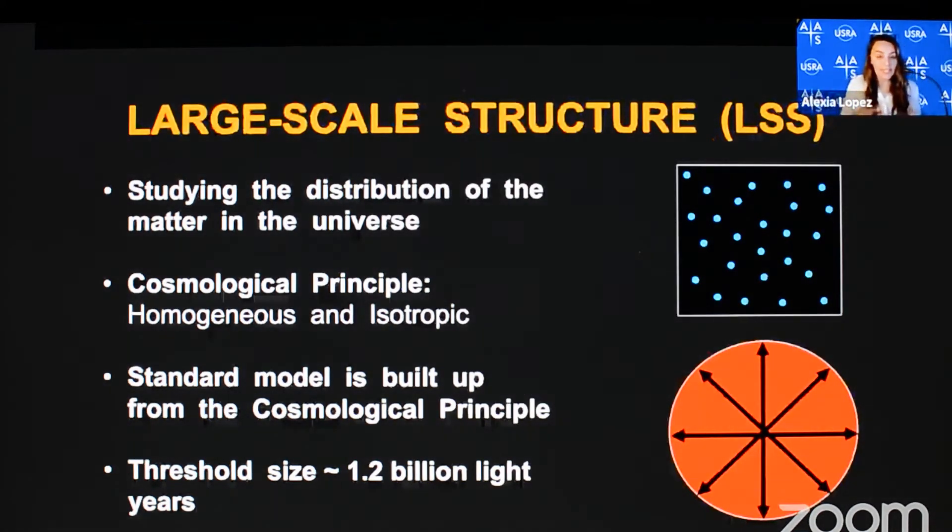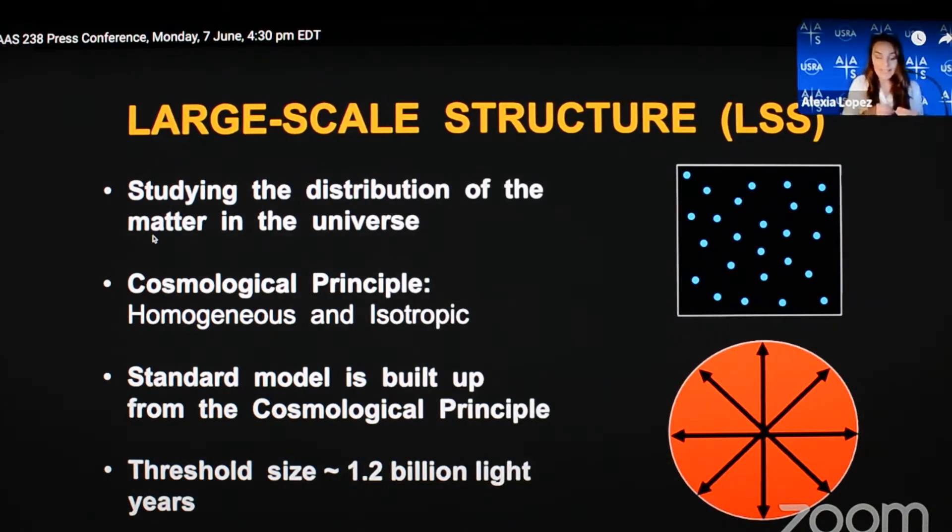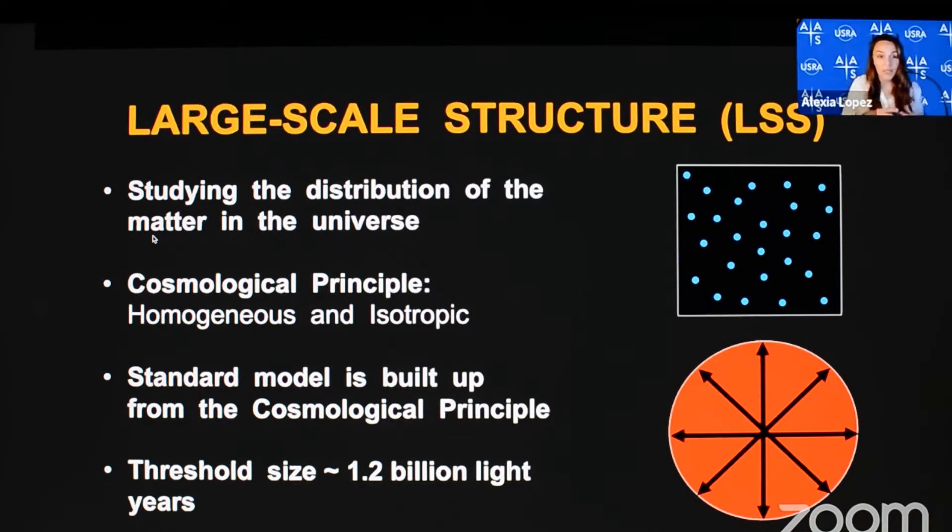To study large-scale structure means to assess the distribution of the matter in the universe. A large-scale structure is an over-dense region of space on some specified large scale that's made up of galaxies and clusters of galaxies. In cosmology, we have what's known as the cosmological principle, which states that the universe is homogeneous and isotropic. Homogeneous means that the matter distribution looks the same everywhere, the same average density, above some specified large scale.